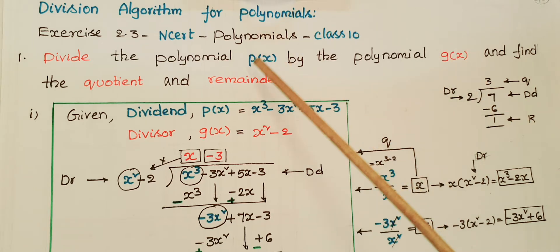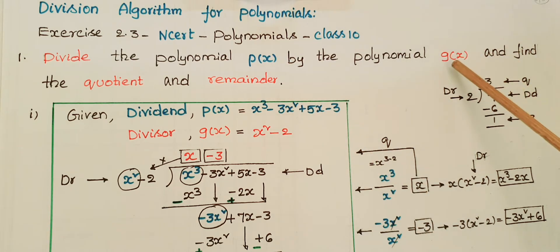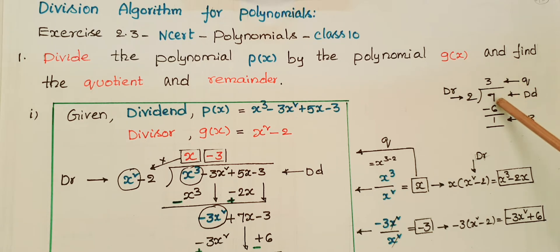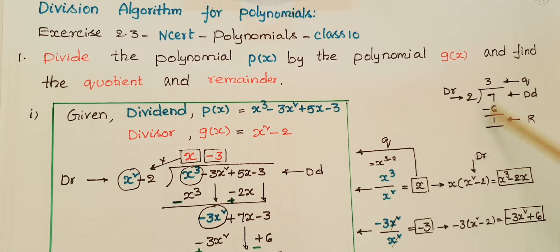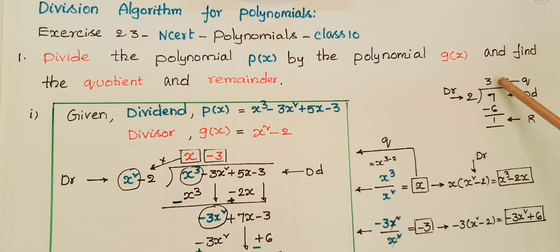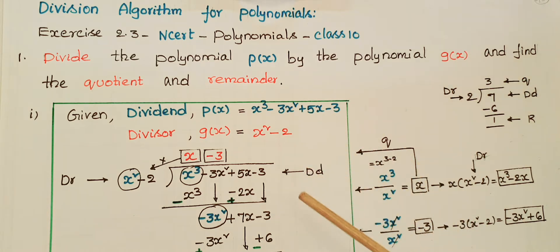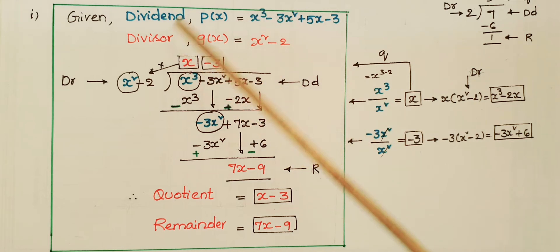Here the dividend is p(x) and the divisor is g(x). For example, if you take the number 7 and divide it by 2, then 7 is the dividend, 2 is the divisor, 3 is the quotient, and the remainder is 1. We will apply the same rule for polynomials as well.